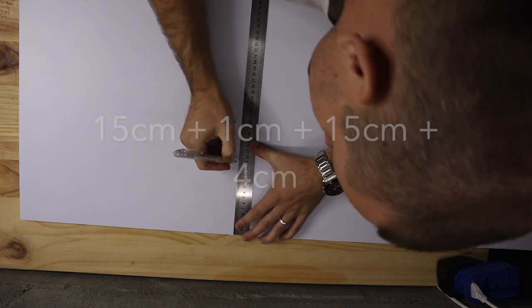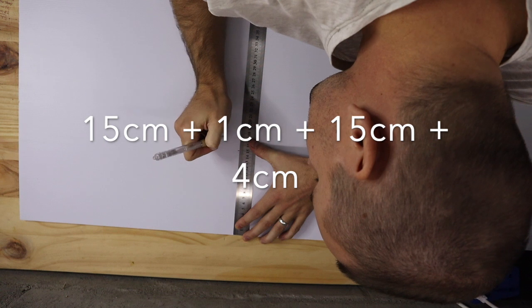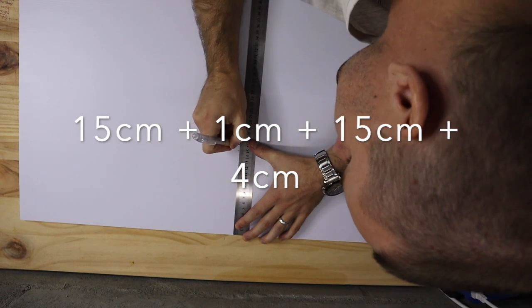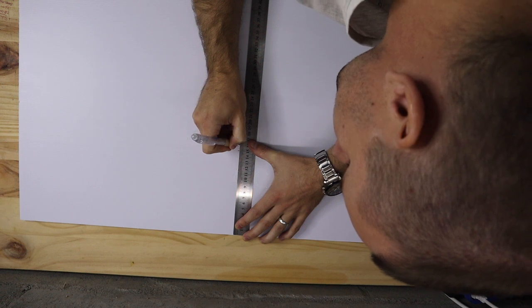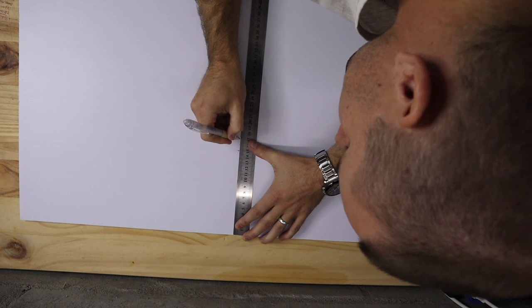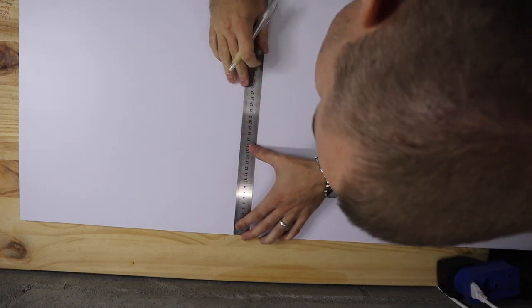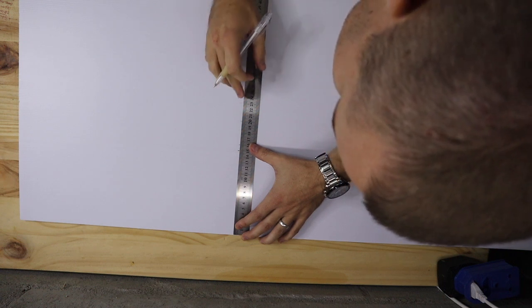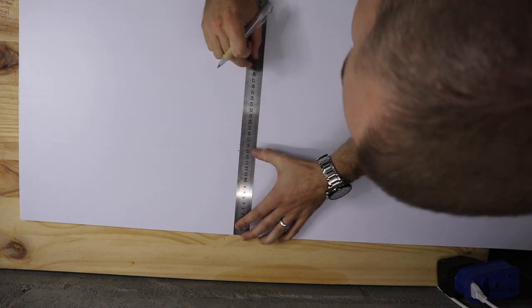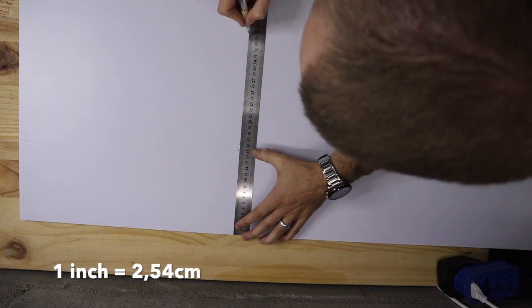I'm going to put 15 centimeters over there, then I'm going to put in a centimeter for the fold, and then another 15 centimeters, which takes us to 31. Then I'll add another 4 centimeters.